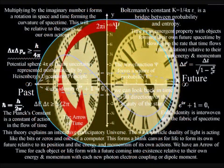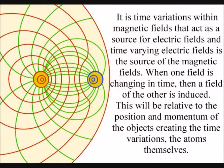Multiplying by the imaginary number i is a rotation, with the imaginary numbers always being at right angles to the real numbers. In this theory, this is because electromagnetic fields are always at right angles to each other.